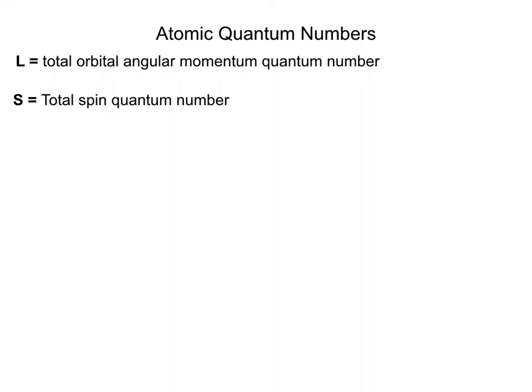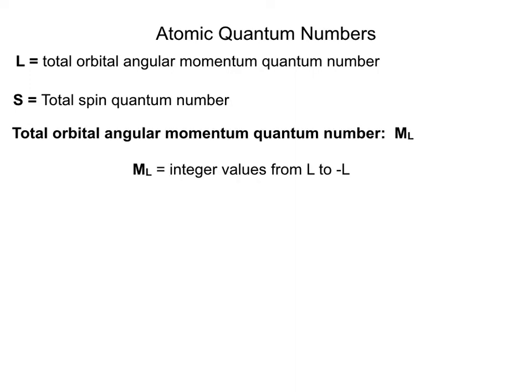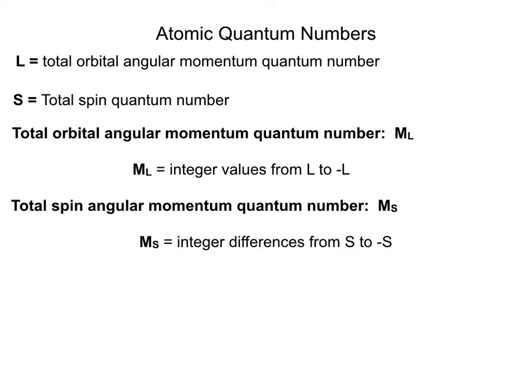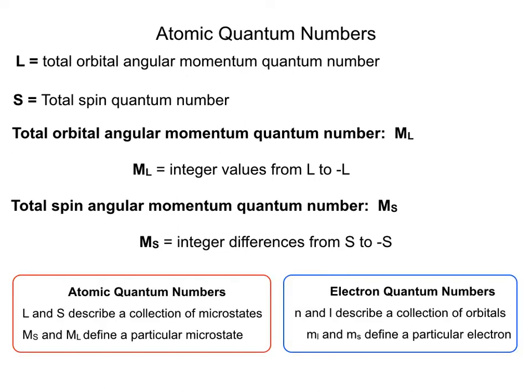The other two key quantum numbers are capital M_L (total orbital angular momentum), with integer values from L to -L, and capital M_S, with values from S to -S. Just as lowercase n and l describe a collection of orbitals (e.g., the three 3p orbitals), while m_l and m_s define a particular electron, the same logic applies at the atomic level.